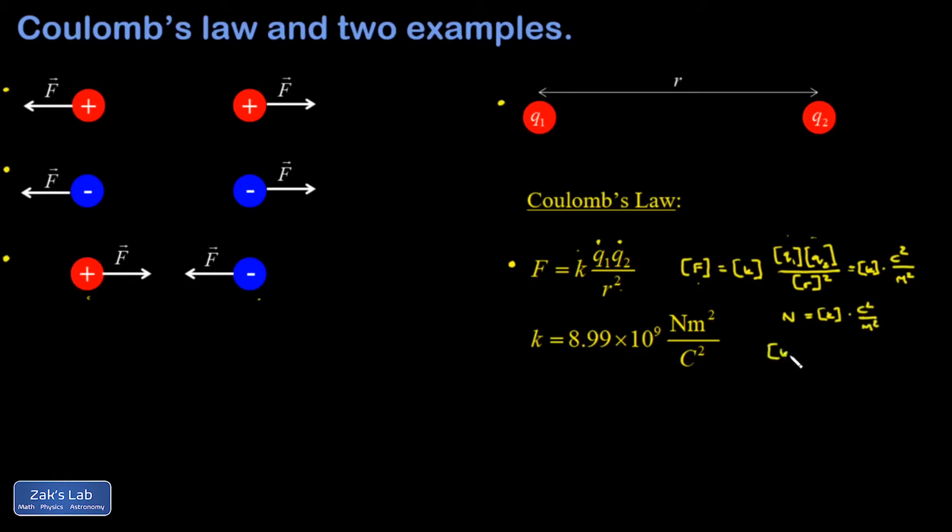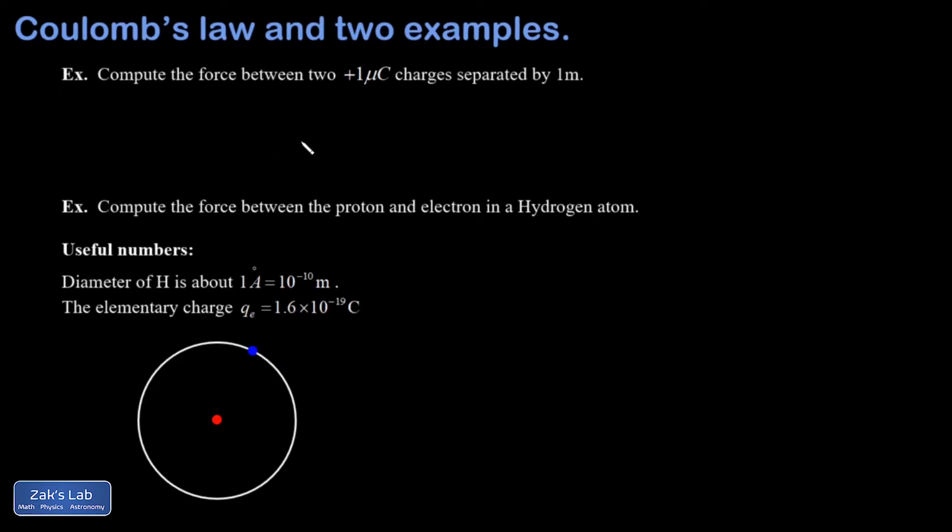So I could just solve for k real quick and say, well, k better have units of newtons in order to get the newtons popping out on the left-hand side. And then I've got to cancel the meter squared and the coulombs squared. And that's why k has these odd units. Moving on to a couple examples.